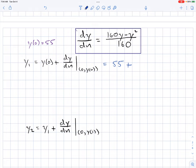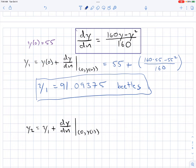So, doing that, plugging this stuff in, I will have 55 beetles, the initial value, plus dy/dn of the initial value, which is going to be 160 times 55 minus 55 squared divided by 160. And when you essentially plug this in the calculator, you get the value of 91.093375. And, of course, that represents the population of beetles. So, really, we would express that as a whole number, but I'll just leave it as a decimal for now.